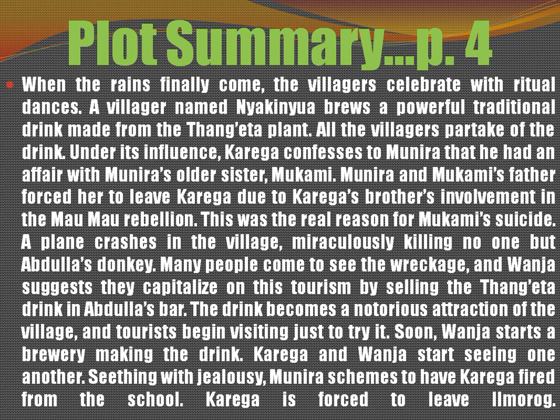Under the influence of the Thangeta wine, Kariga began to tell the story about himself — how he had a relationship with Mukami, a married woman and the sister of Munira. This did not go well with many people, especially Mukami's parents. The allegations and disgrace led Mukami to commit suicide. The people had not been aware of her affair with Kariga until the alcoholic drink made Kariga reveal the secret.